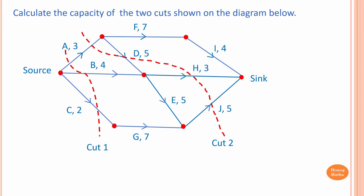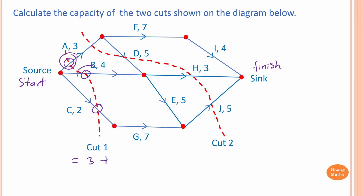Let's go through the first example and work out the capacity of each cut. The source is the start and the sink is the finish. For cut one, the edge from A comes straight from the source, so this is a cut. Similarly, the next two edges also go straight from the source, so they are cuts as well. Cut one equals 3 plus 4 plus 2, so the answer is 9 units.